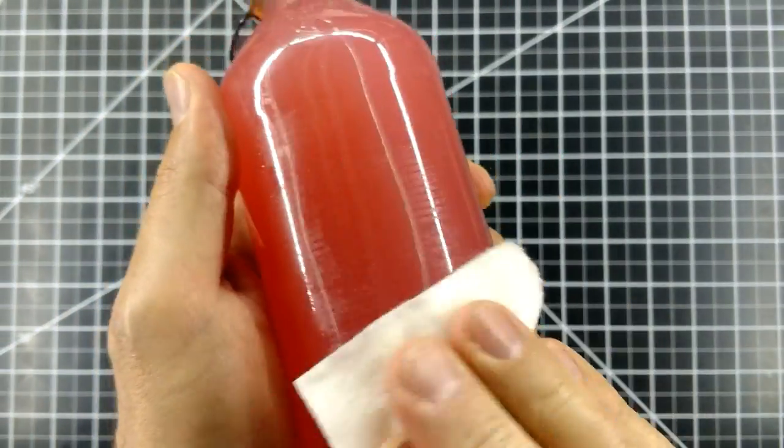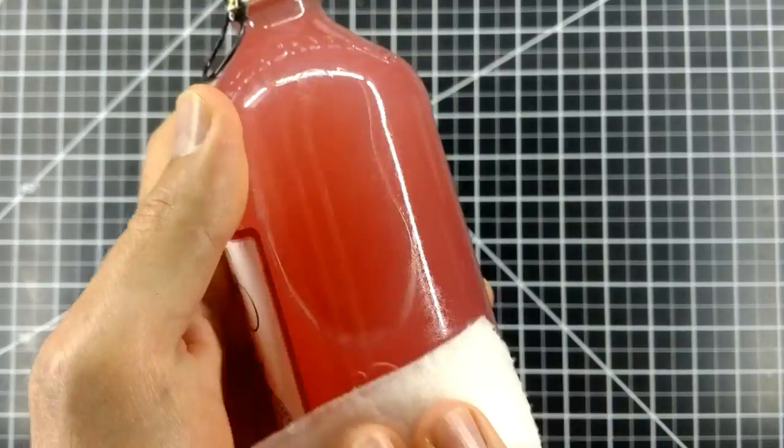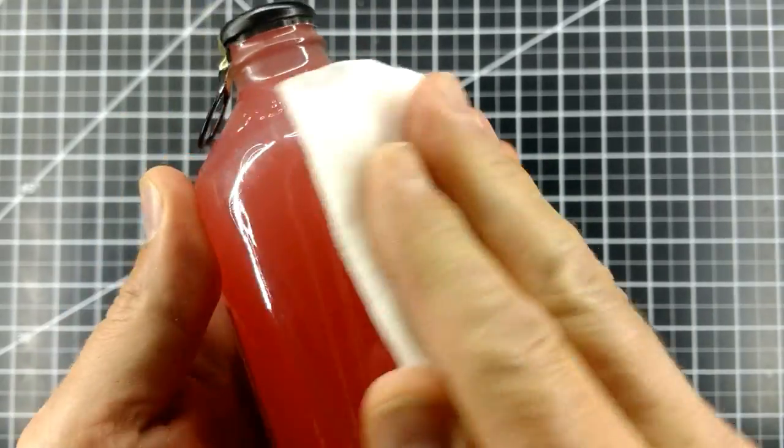The paper label comes off easy, maybe even easier than it did with the soapy water. The remaining glue comes off about the same easy. I noticed that the paint on my table is a little bit smudged by the acetone too.